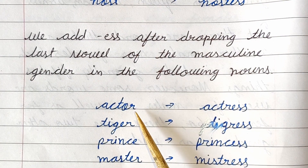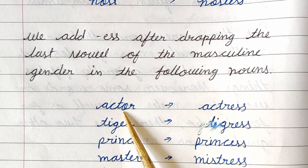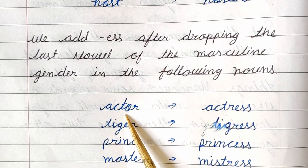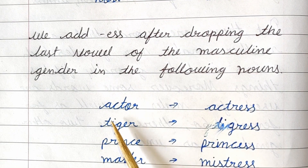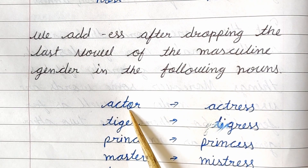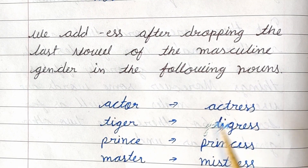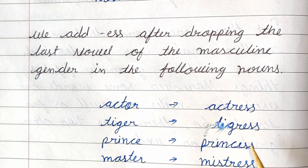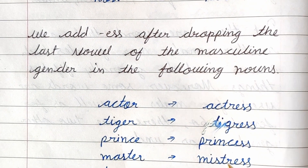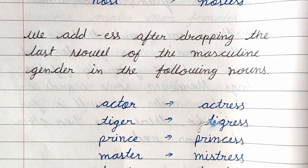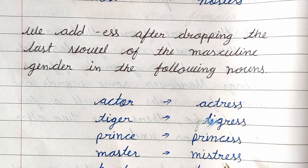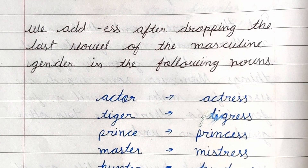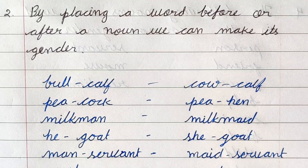We add '-ess' after dropping the last vowel of the masculine gender in the following nouns. Some words end with a vowel before the last letter, so we remove that vowel and add '-ess' — for example: actor/actress, tiger/tigress, prince/princess, master/mistress, hunter/huntress, waiter/waitress.